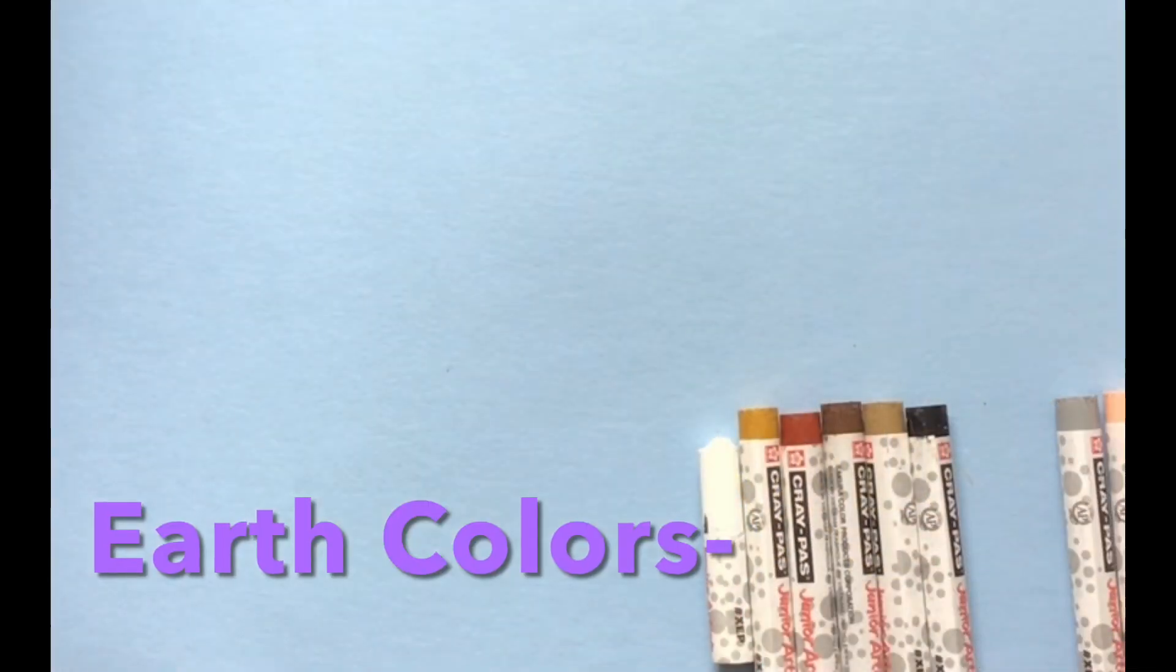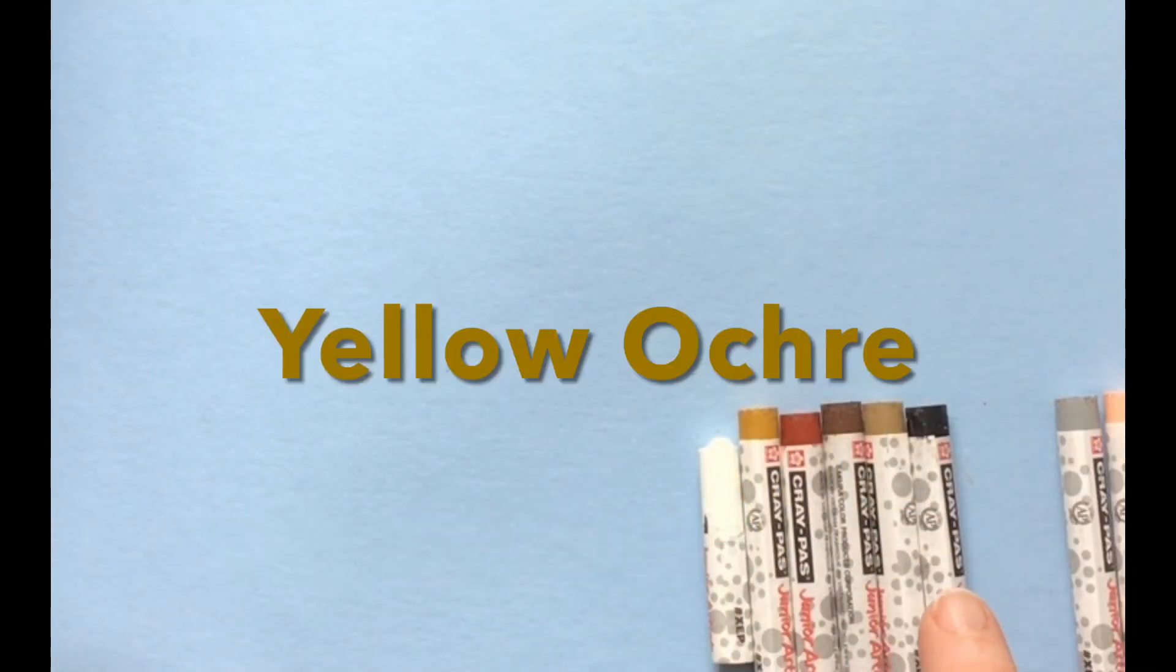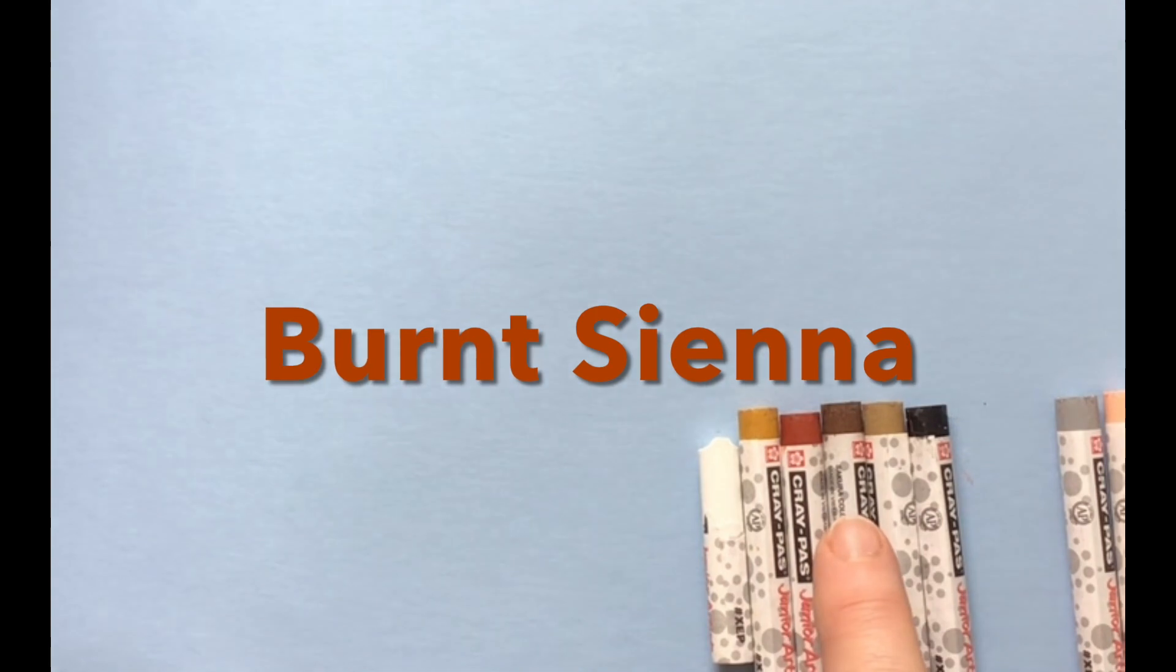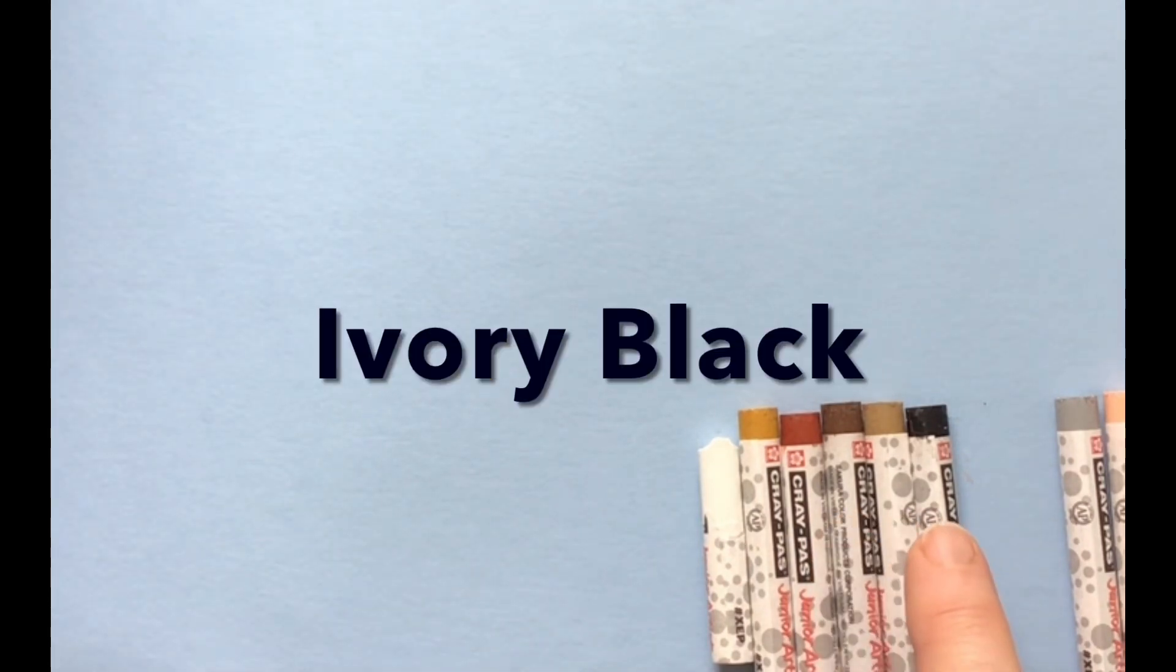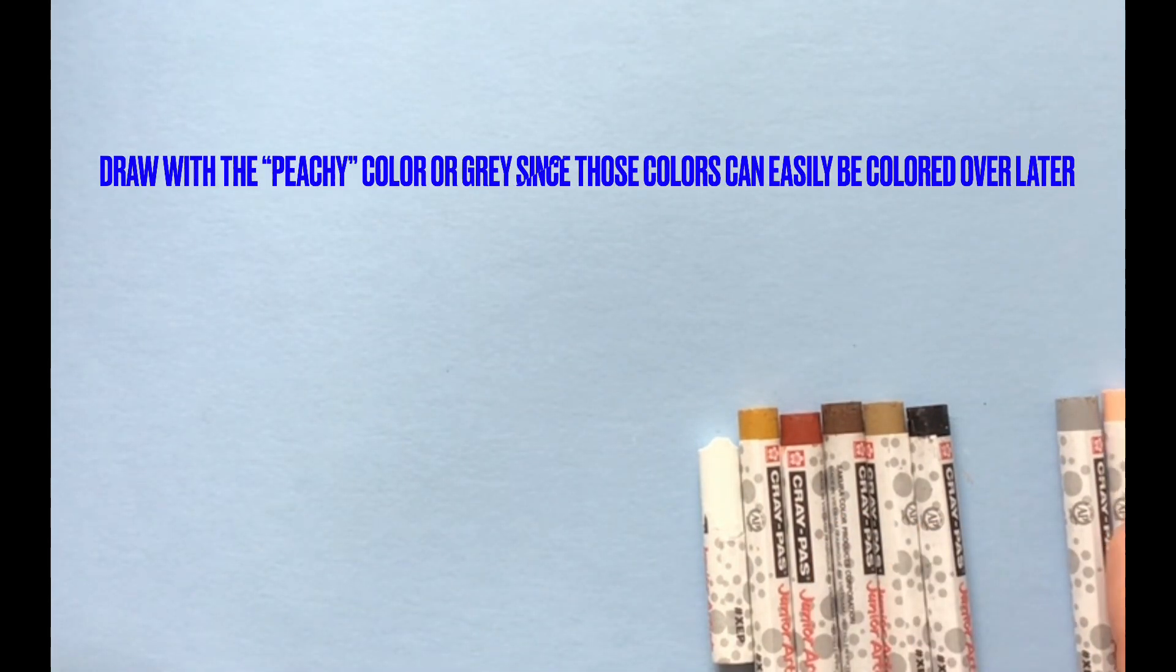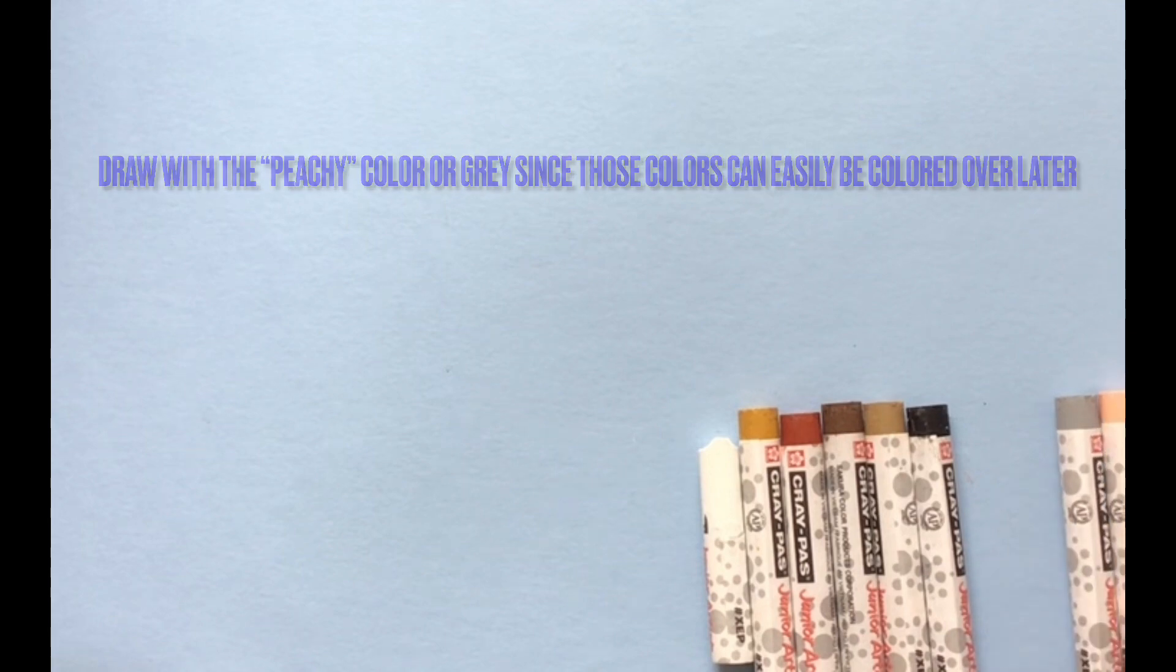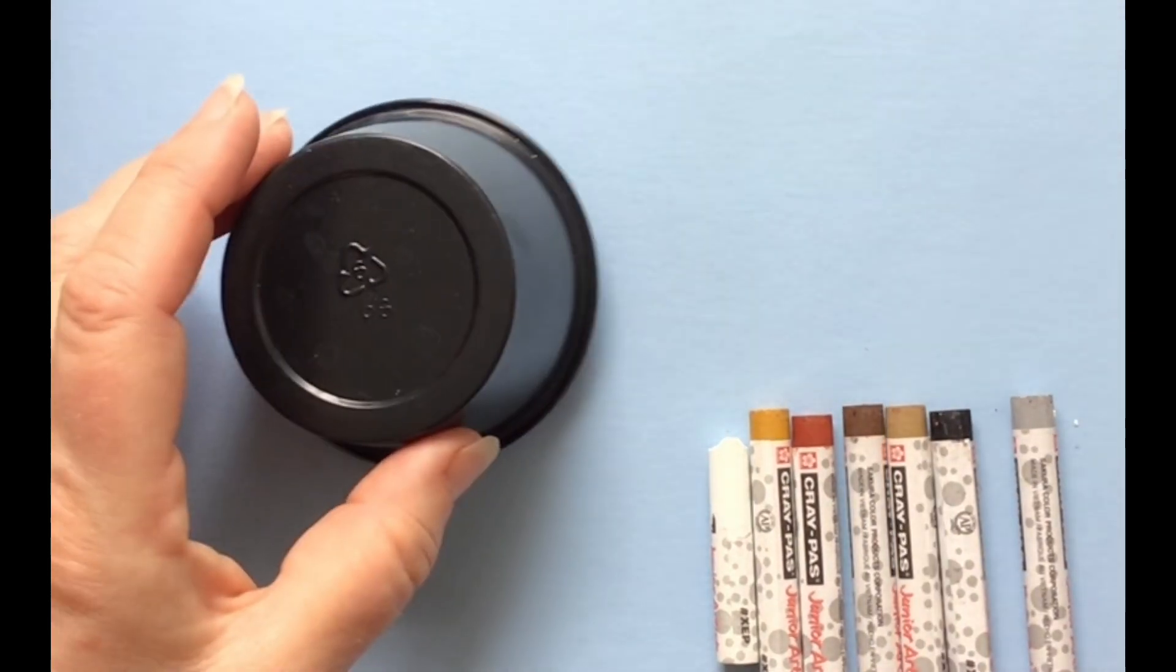Welcome to the YouTube channel. I have earth colors here: yellow ochre, burnt sienna, burnt umber, raw umber, ivory black, and these two I would just call peachy color and gray. I would use the peachy color to draw with.